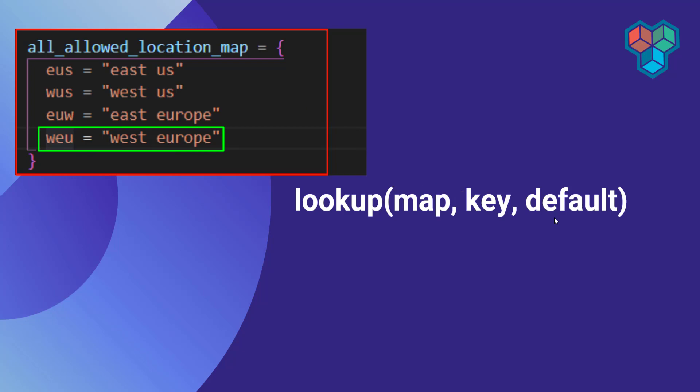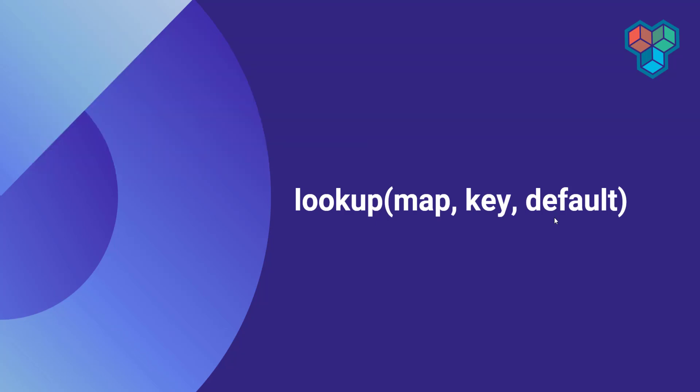By having a default value, you can find a key-value pair from the map object, and if it doesn't find one, use this default value. What would be the result type of a lookup function? It will give you the value out of that particular key — so if you have a key-value pair, it will search for the key and return the corresponding value.